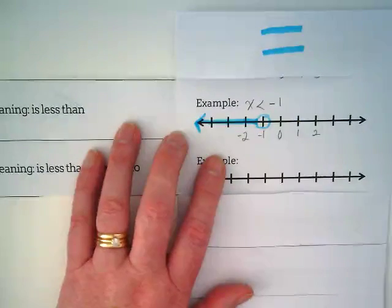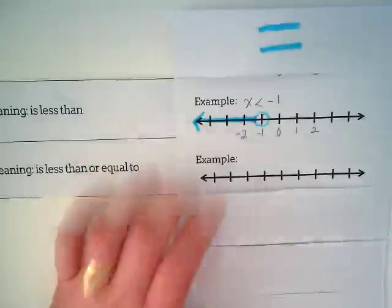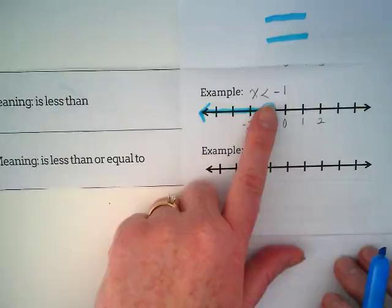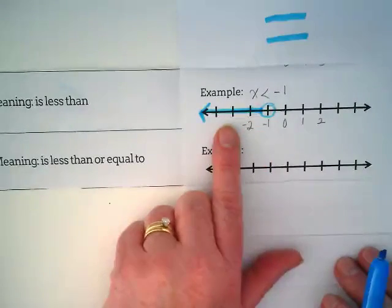Why? Because the symbol is less than. Everything less than negative 1 would make this inequality true. Why is negative 1 not solid? Because it's not equal to. Negative 1 is not less than negative 1. But everything less than negative 1 is.